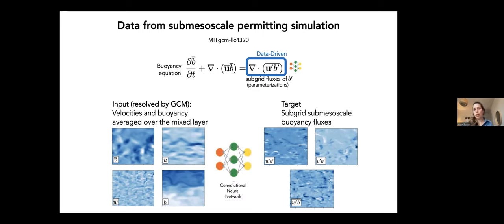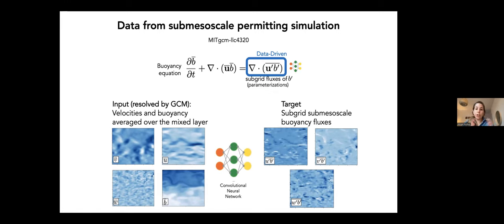We use a convolutional neural network, learning the relationship between the coarse-resolution variables and what we want to predict. This is quite similar to the physics-based approach — we have larger scale variables, turbulent fluxes, and mixed layer depth, and we are predicting what the fluxes should be — except that the relationship is now determined by the neural network rather than theory.